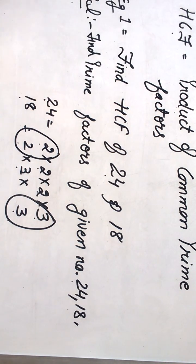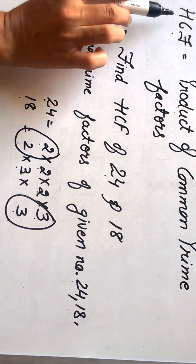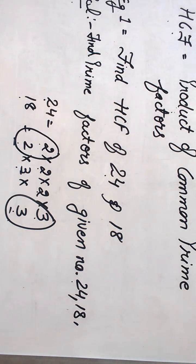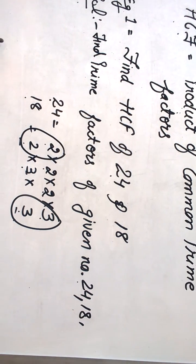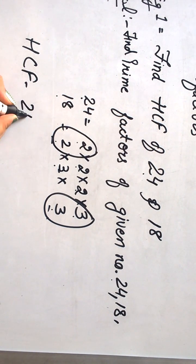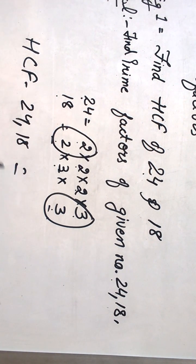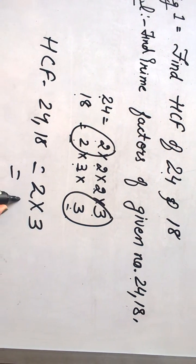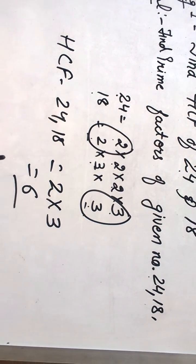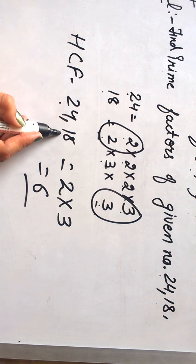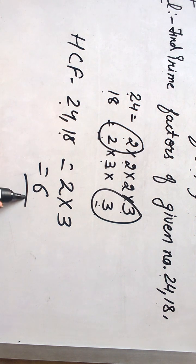HCF is the product of common factors. So HCF for 24 and 18 is 2 × 3, which equals 6. Therefore, the HCF for the given numbers 24 and 18 is 6.